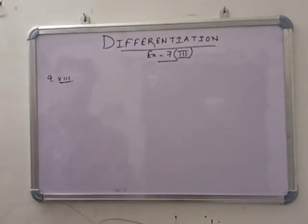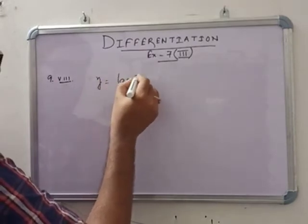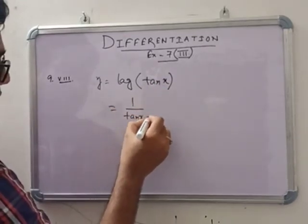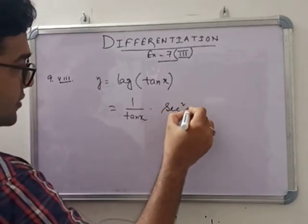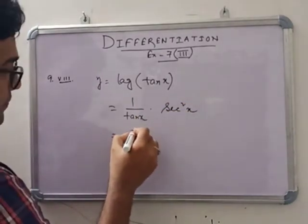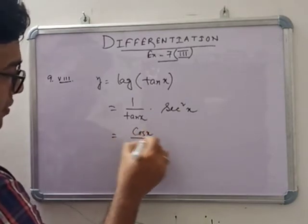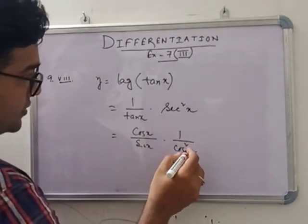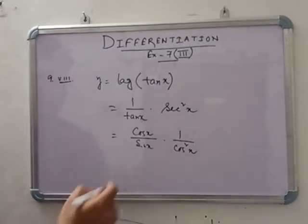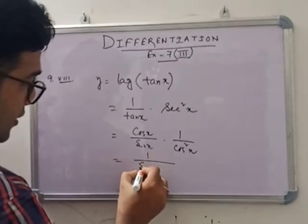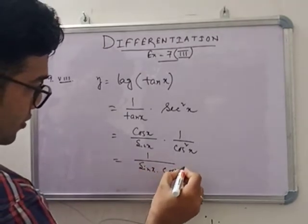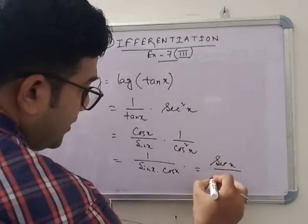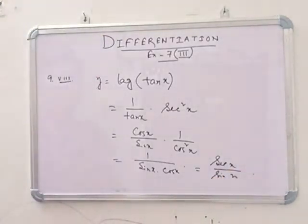In number 8, given y = log(tan x). So dy/dx = 1/tan x · sec²x. Simplifying: cos x/sin x · 1/cos²x = 1/(sin x · cos x). This can also be written as sec x / sin x, or equivalently 2/sin(2x).